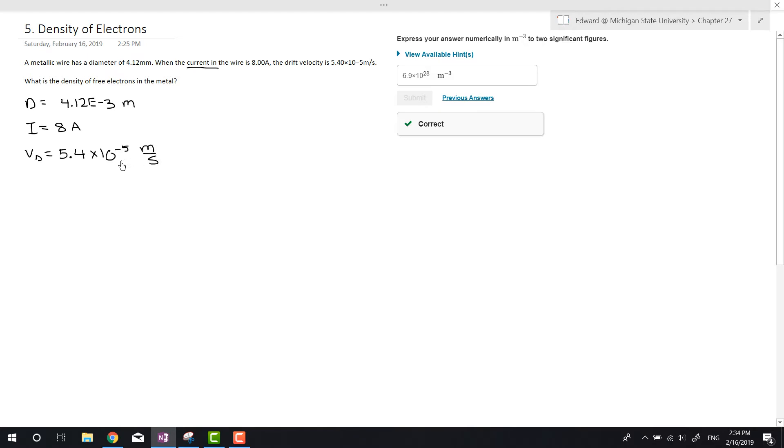It's asking us what is the density of free electrons in the metal. So we're trying to find the density of electrons. One equation that relates all this information is I equals N E V_d A. You should have this in your equation sheet. As you guys can see, we have everything besides N. So let's just rearrange this to solve for N. So N is equal to I divided by E V_d A.